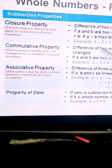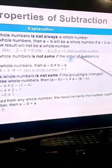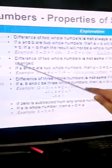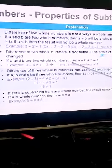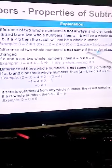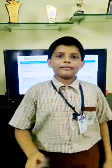Next we will see commutative property. The difference of two whole numbers is not the same if the order of the numbers is changed. If a and b are two whole numbers, then a minus b is not equal to b minus a. For example, three minus four equals negative one, but four minus three equals one — they are not equal.